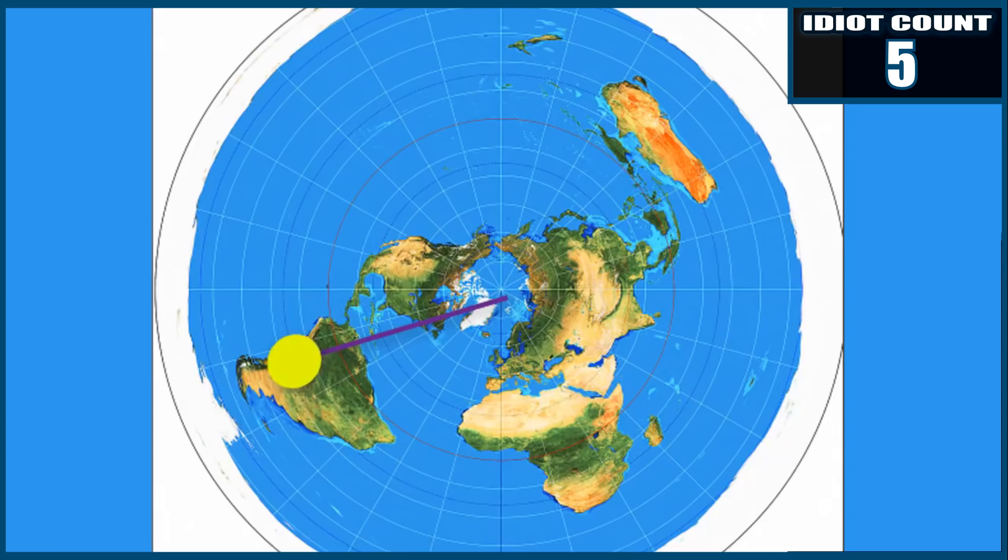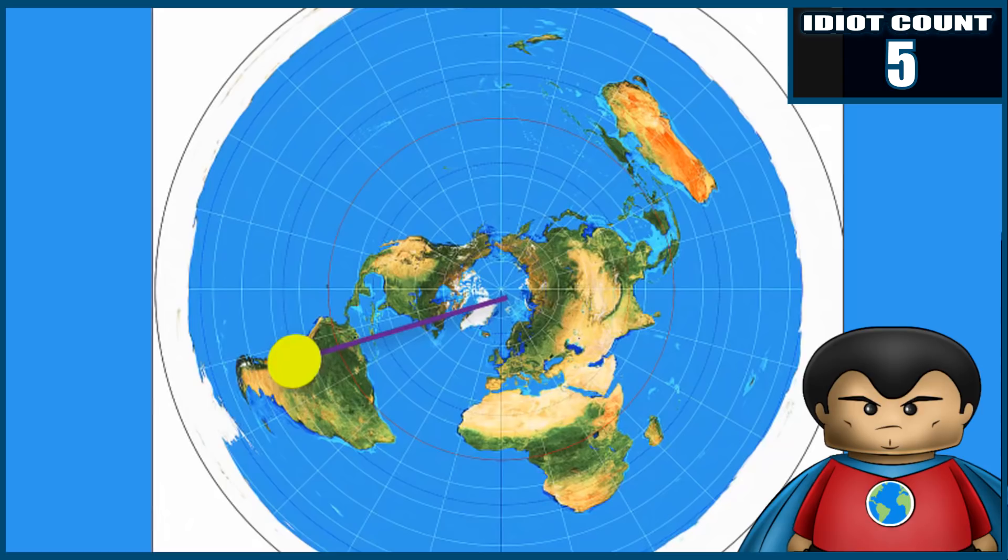But this is where I get into an argument where I've had with globe people before, where it's one rotation per day is what it is. Okay, so now we get to the bottom of your stupidity. You're not talking about the linear velocity of the sun, you're talking about the angular velocity of the sun. And this has its own problems, because it only works when you're standing at the North Pole. As stated before, when observing the sun from the equator, there is no difference in angular velocity when the sun is over the Tropic of Cancer than when it's over the Tropic of Capricorn. You are a fucking idiot.